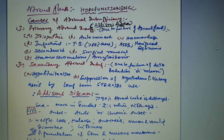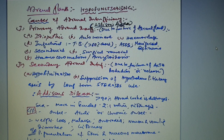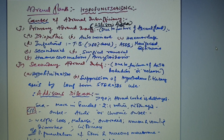Today we are going to discuss adrenal glands and their disorders: hypofunctioning, hyperfunctioning, and the various problems they cause. Adrenal glands are also called suprarenal glands. There are two adrenal glands, one on each side, situated above the kidney — that is why they are called suprarenal glands.